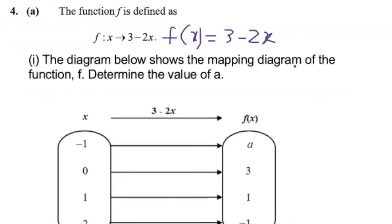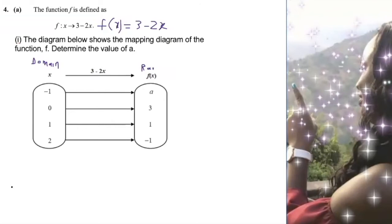The diagram below shows the mapping diagram of the function f. We need to determine the value of a. The first part represents the domain, which consists of our x values. The domain assists us in getting the range, which are the y values. f(x) and y are the same thing.